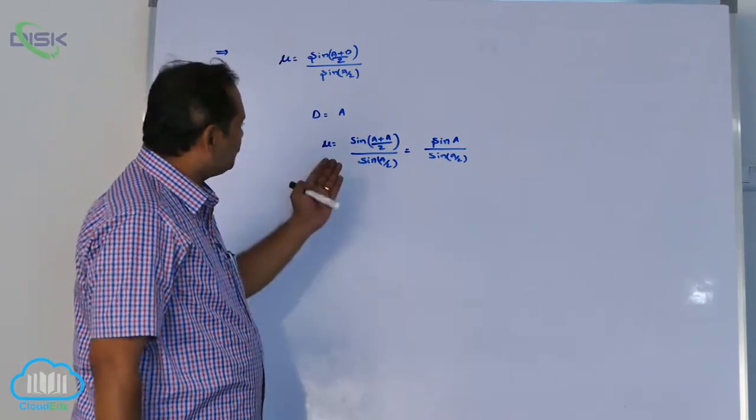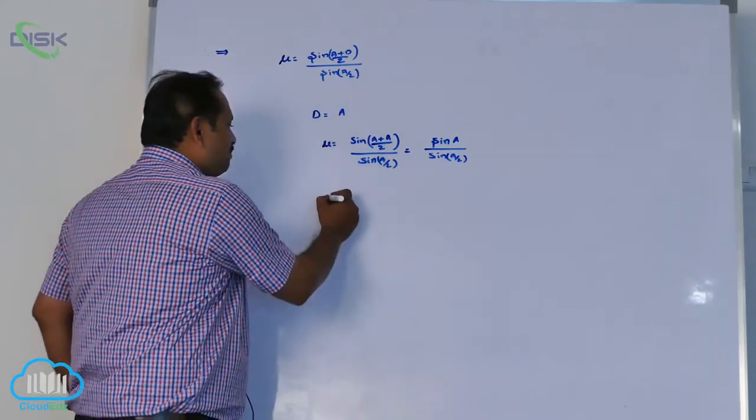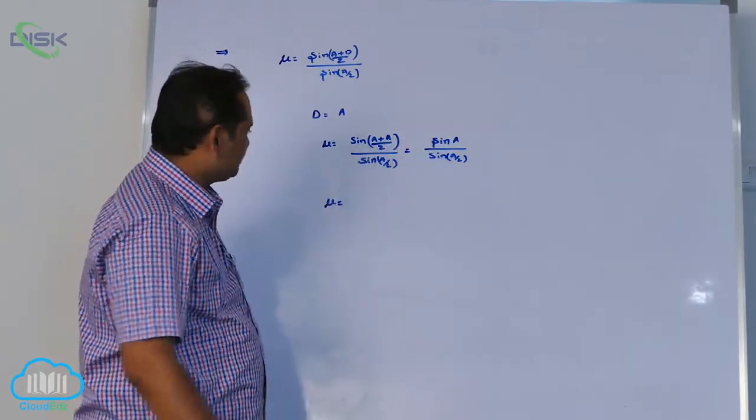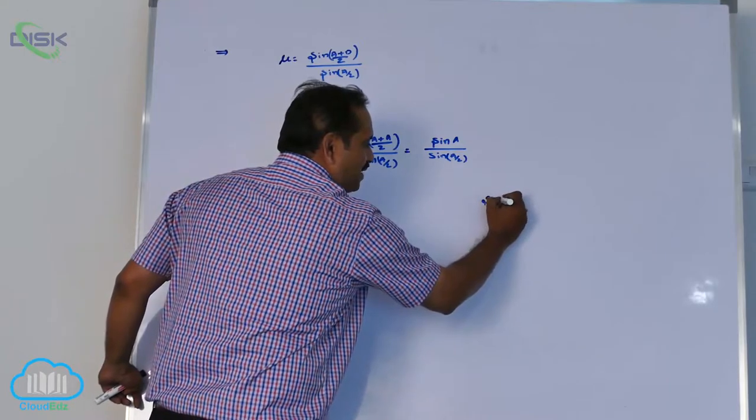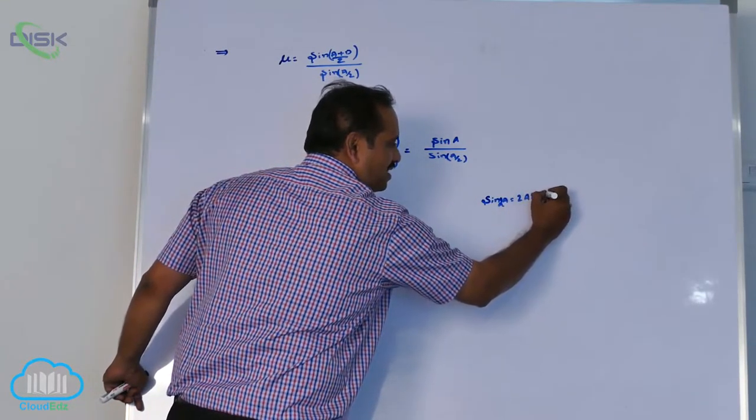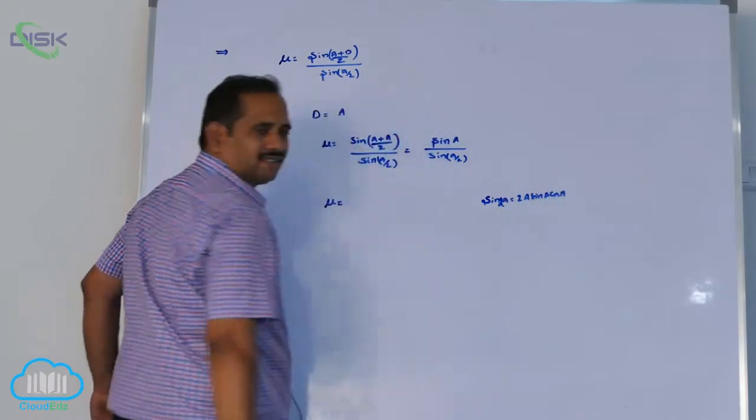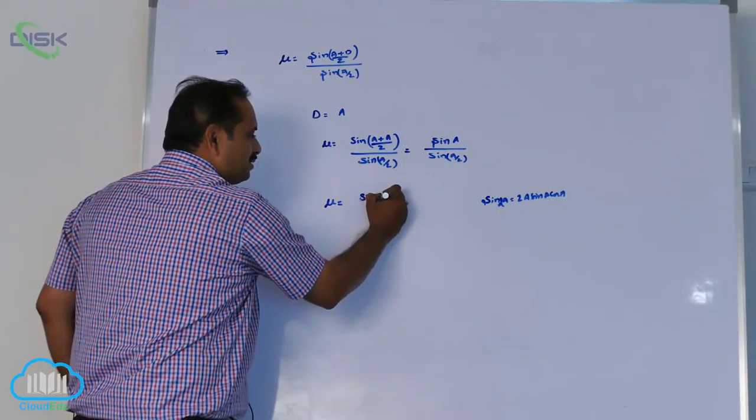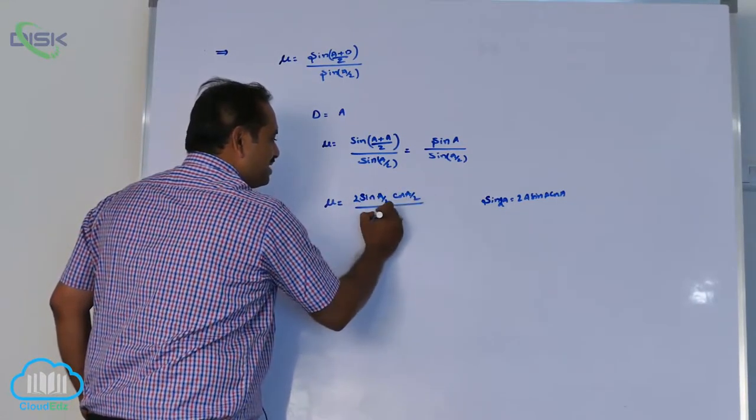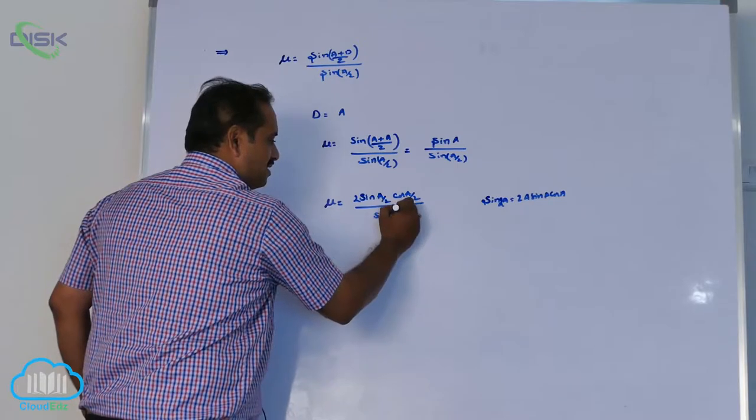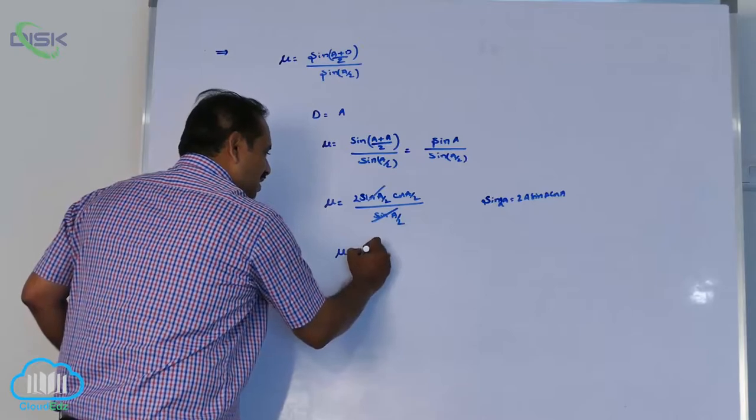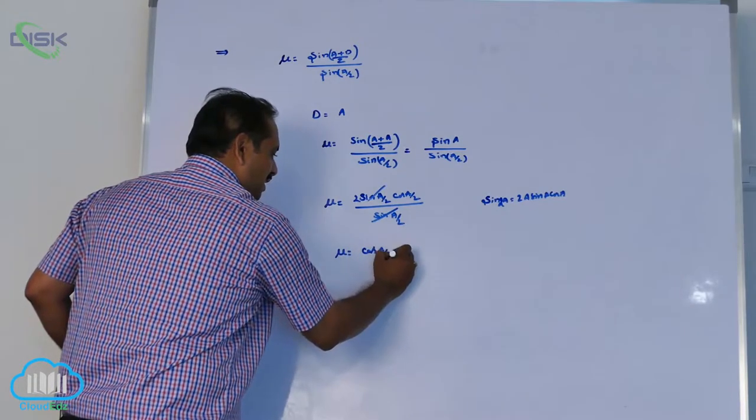Now, I am going to further expansion with the help of mathematics known as trigo. Sin a, a lot of you know very well, but I want to write once. Sin 2a equals 2 sin a cos a. That means 2 sin a by 2 cos a by 2 by sin a by 2. Sin a by 2 gets cancelled. Mu equals cos a by 2 into 2.